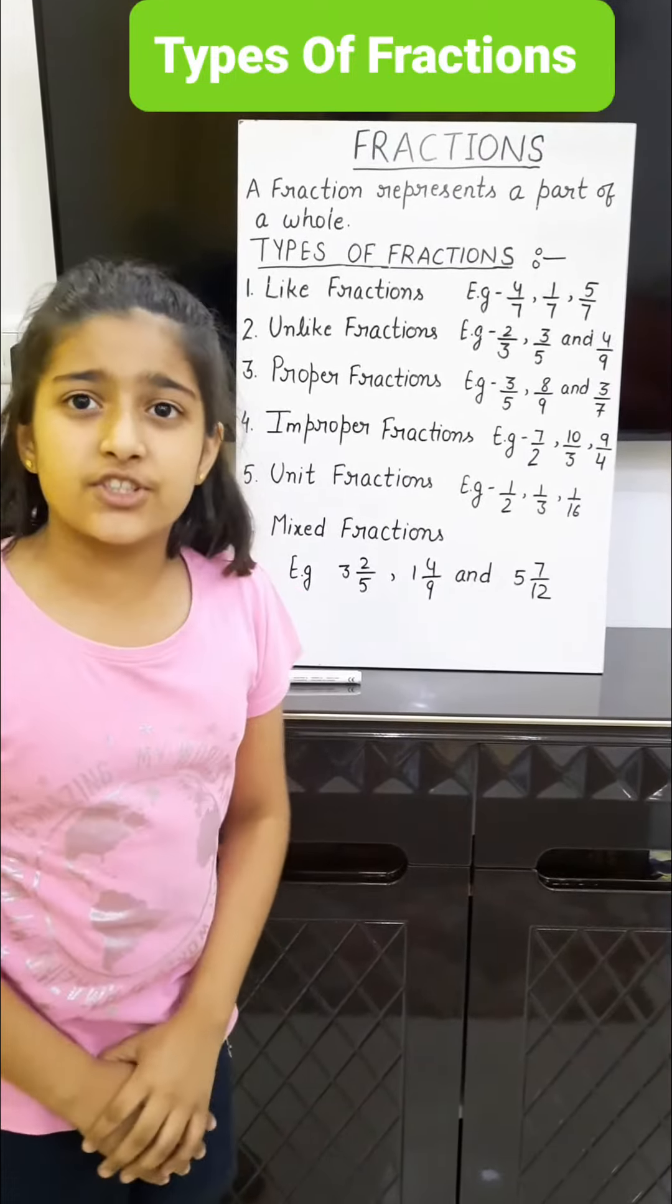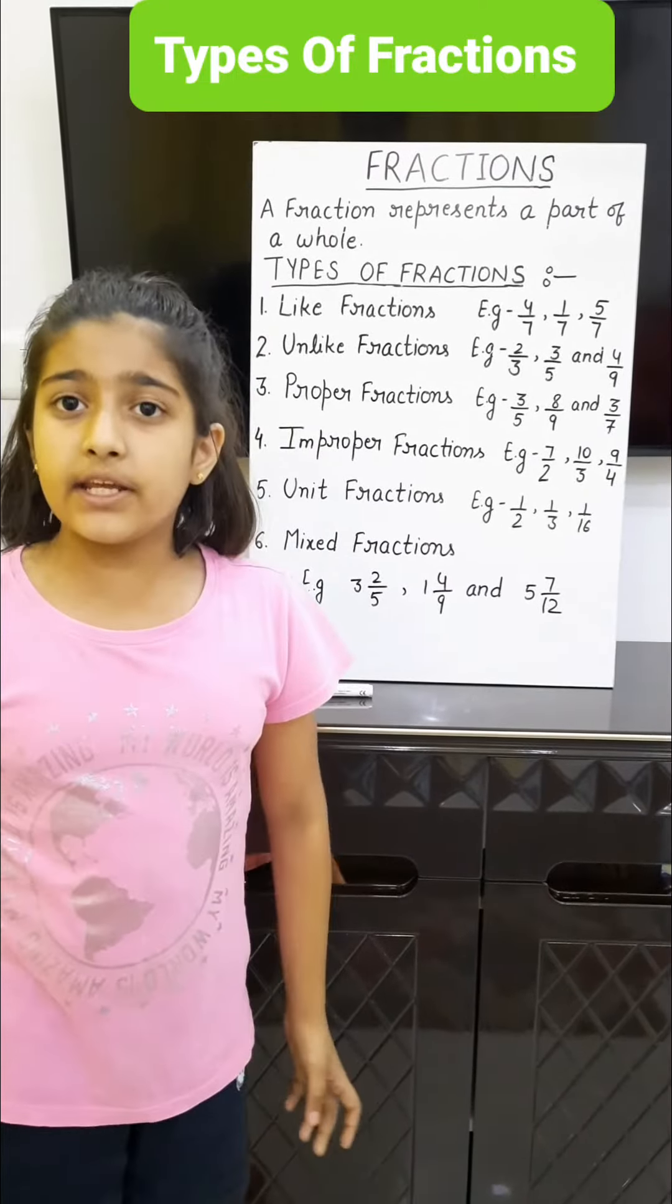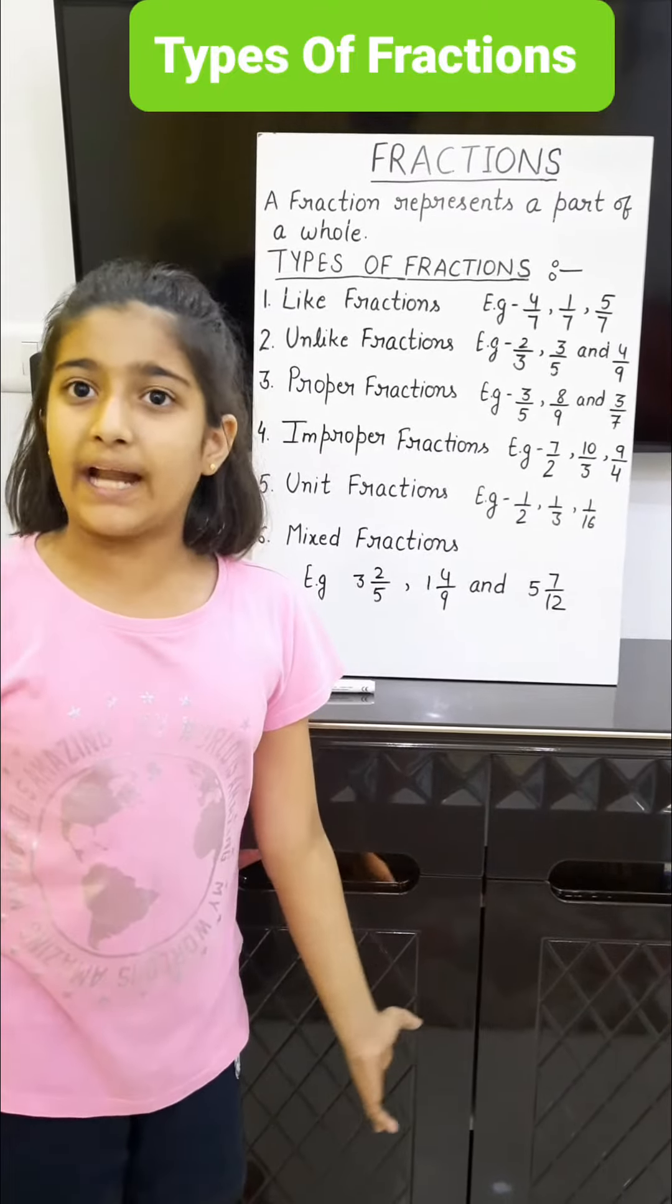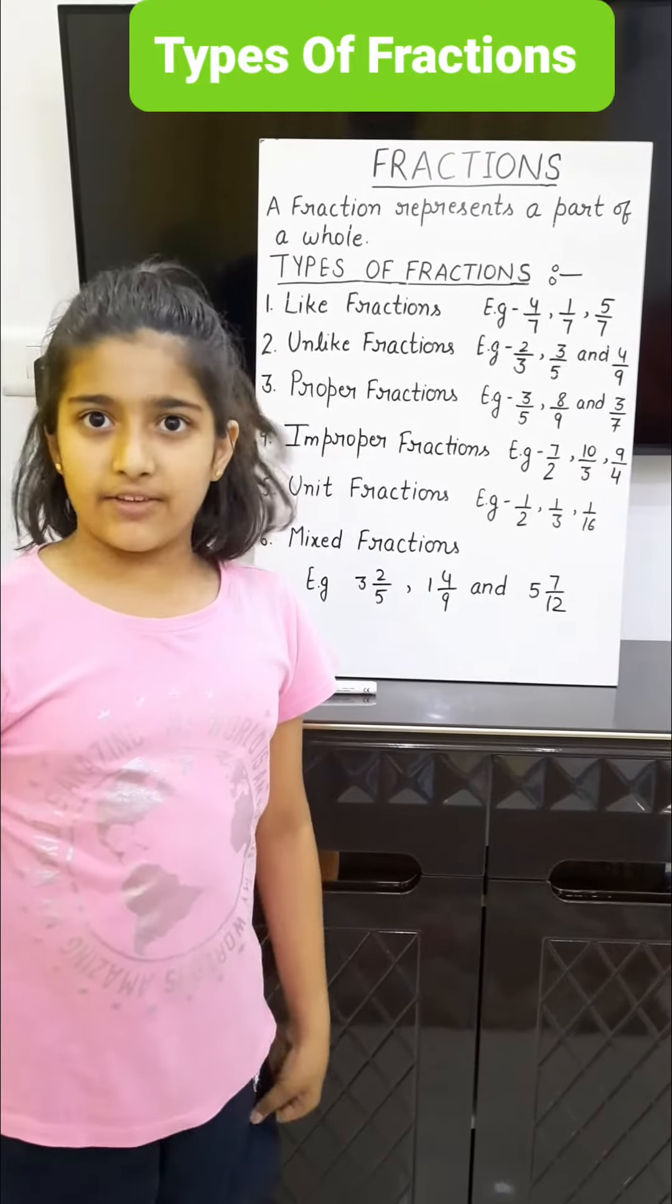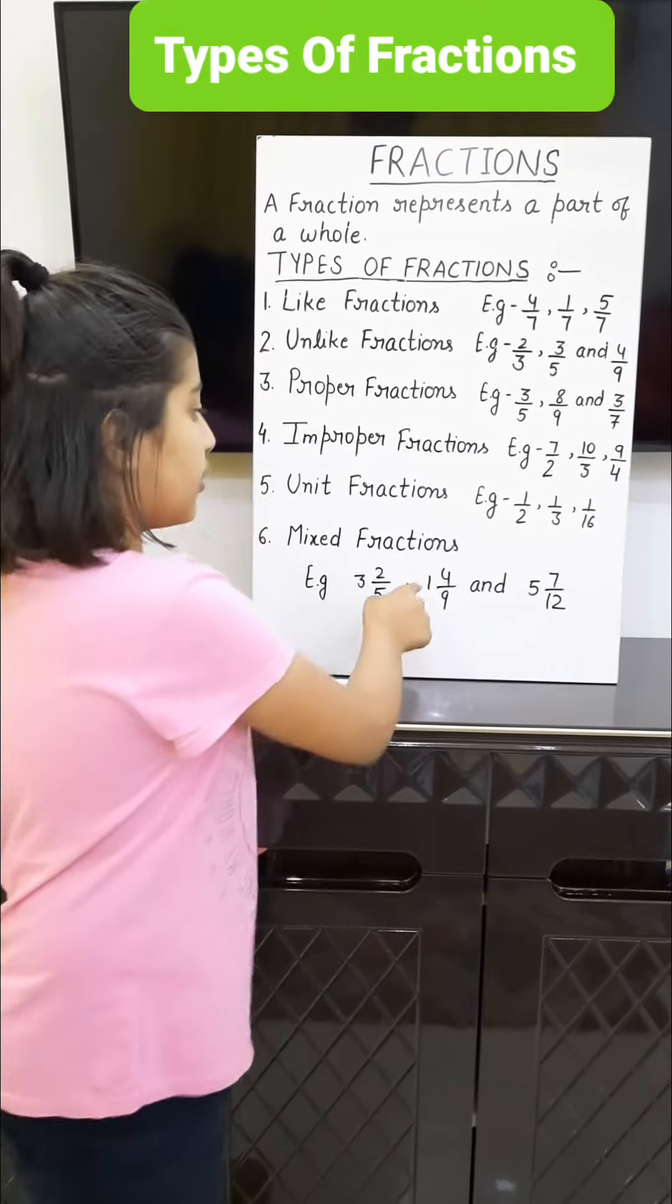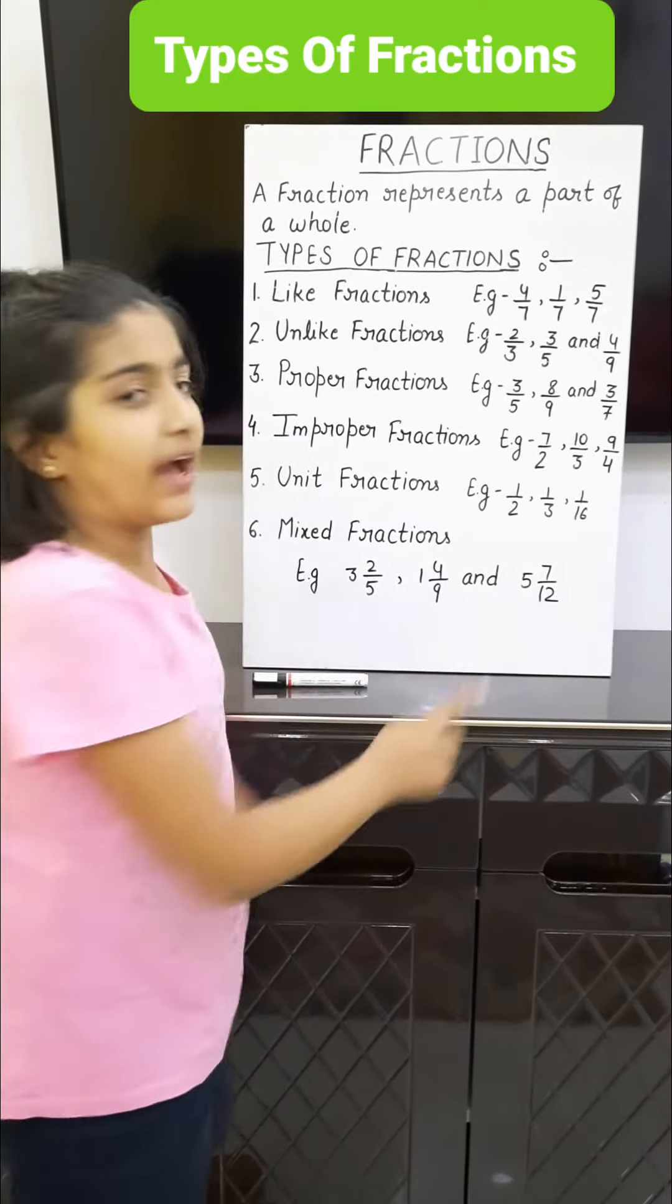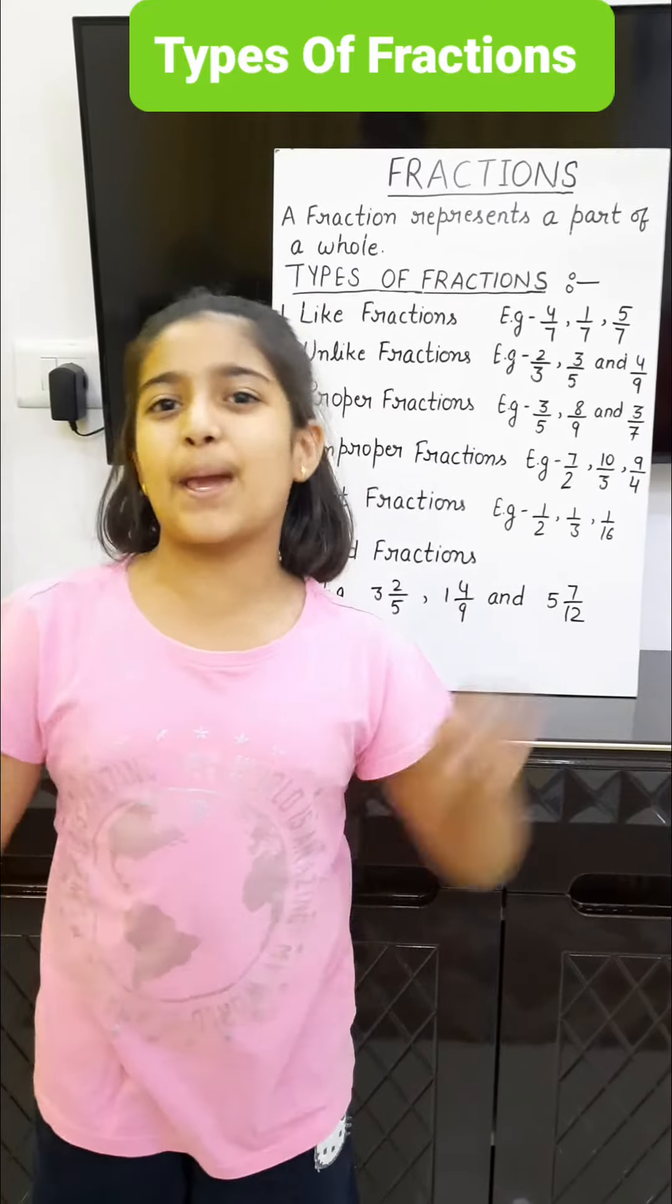Sixth, mixed fractions: fractions which are combinations of a whole number and an improper fraction. Example: 3 and 2/5, 1 and 4/9, and 5 and 7/12. Thank you and have a nice day. Bye-bye.